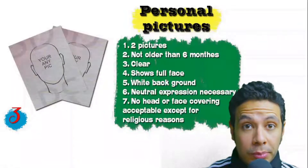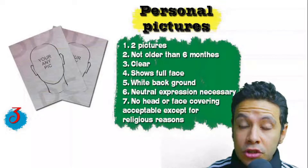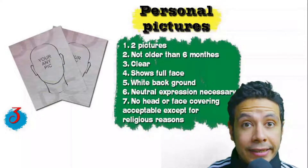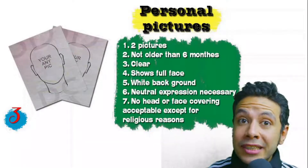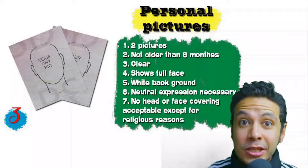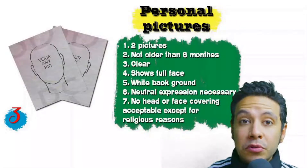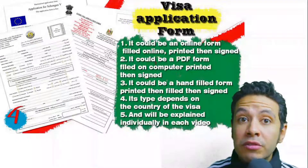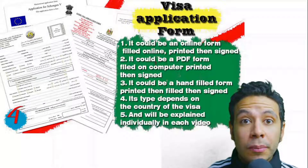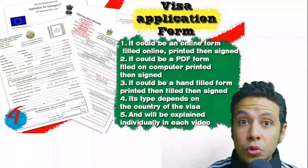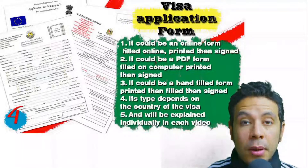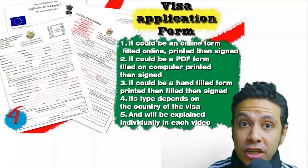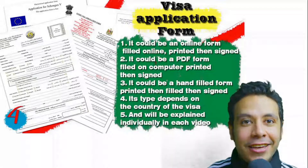For personal pictures, you will need at least two — sometimes one, other times three — but generally two. They must be new, not older than six months, clear, showing your full face, preferably with a white background, with normal neutral expressions. No head or face covering is acceptable except for religious reasons. For the visa application form, generally one copy is needed, though sometimes two or three are required. Many countries now provide the form on an online platform so you can fill it online and then print and sign it.